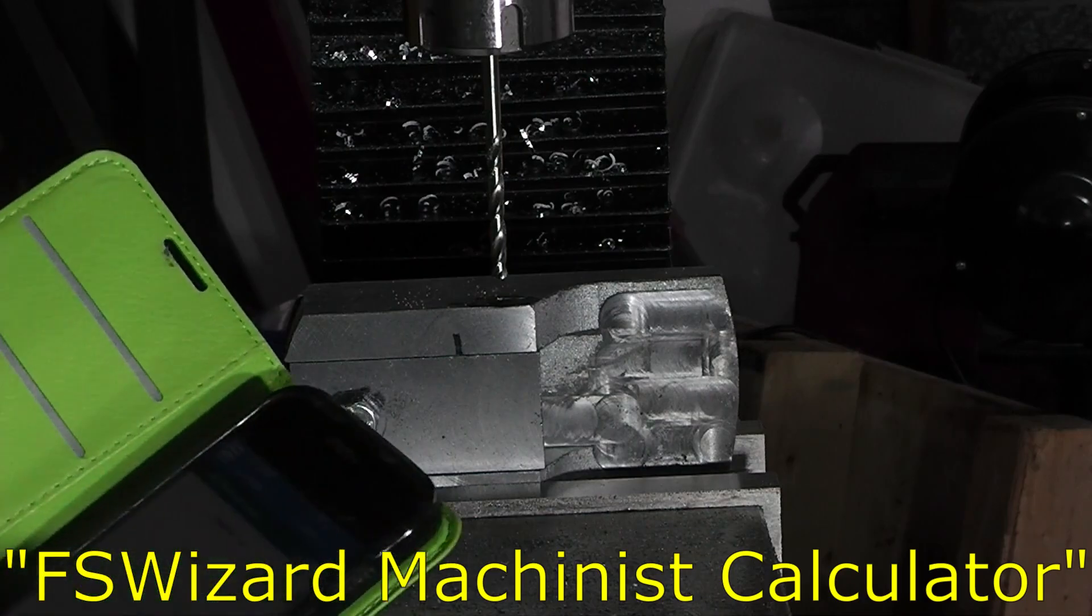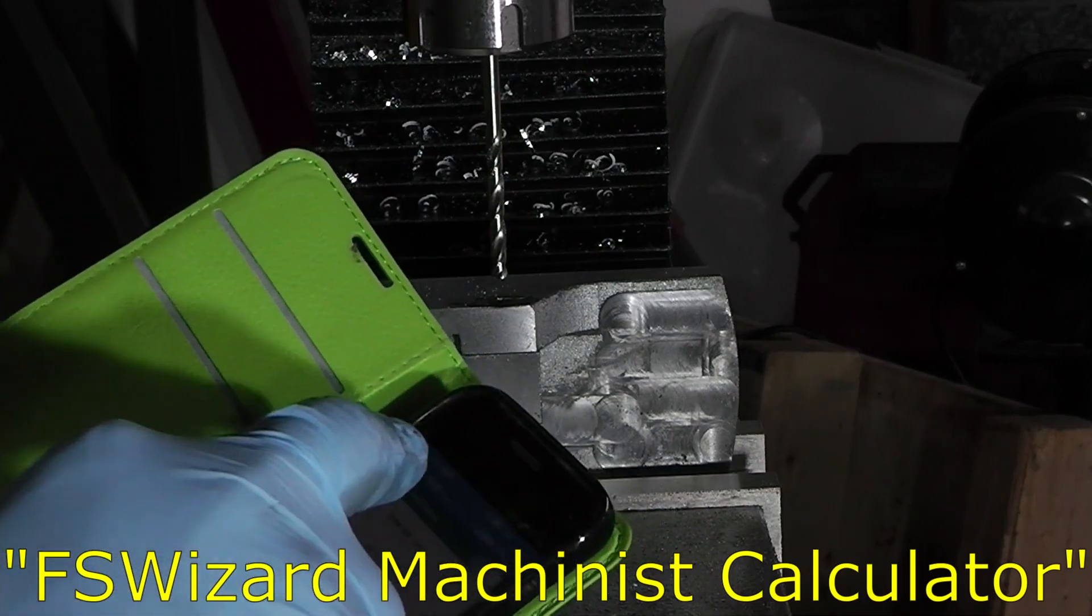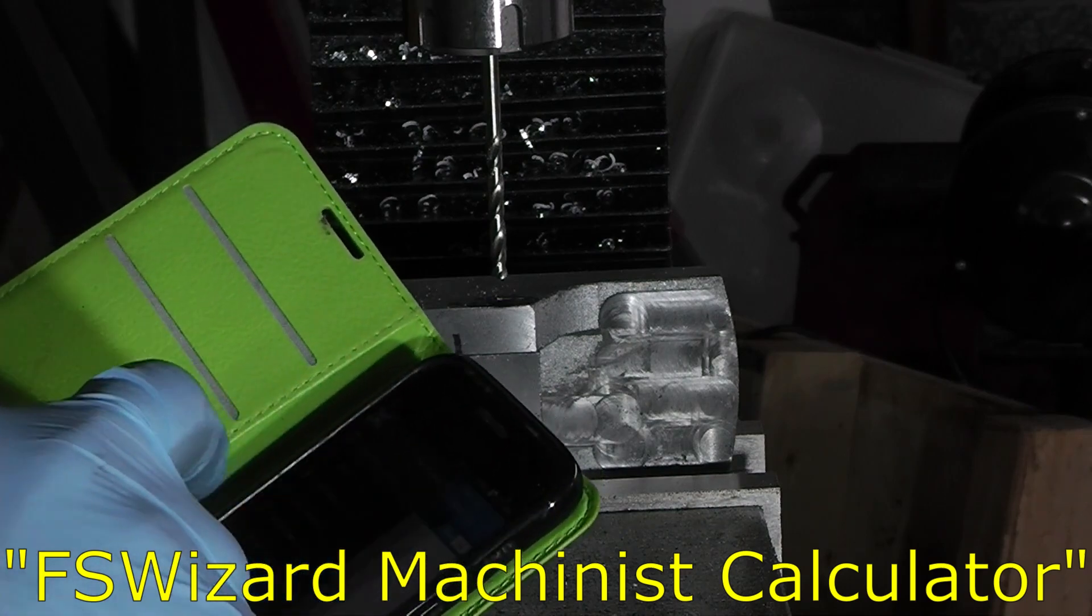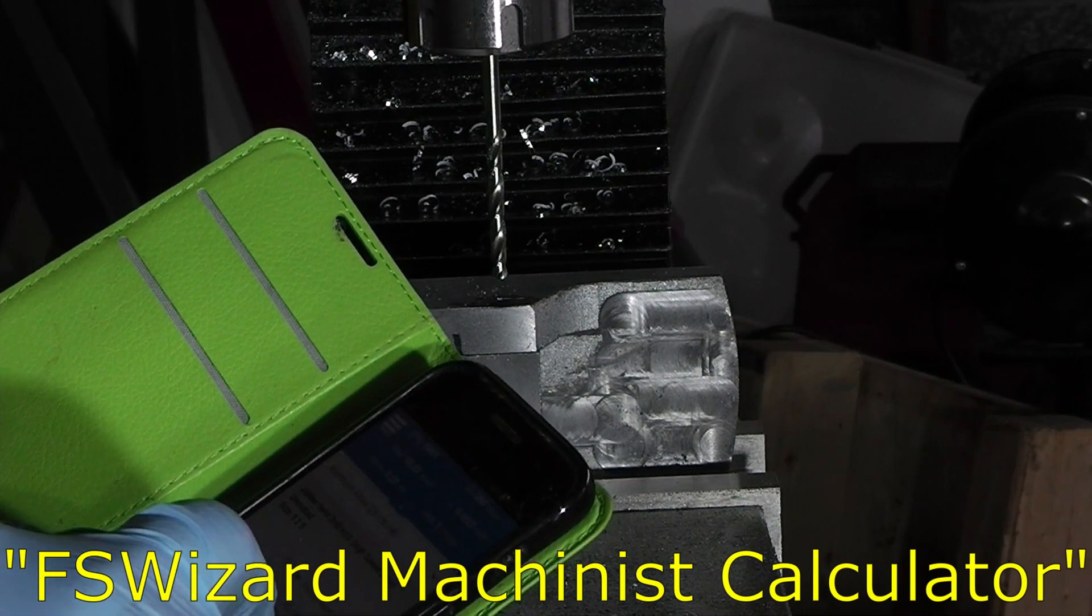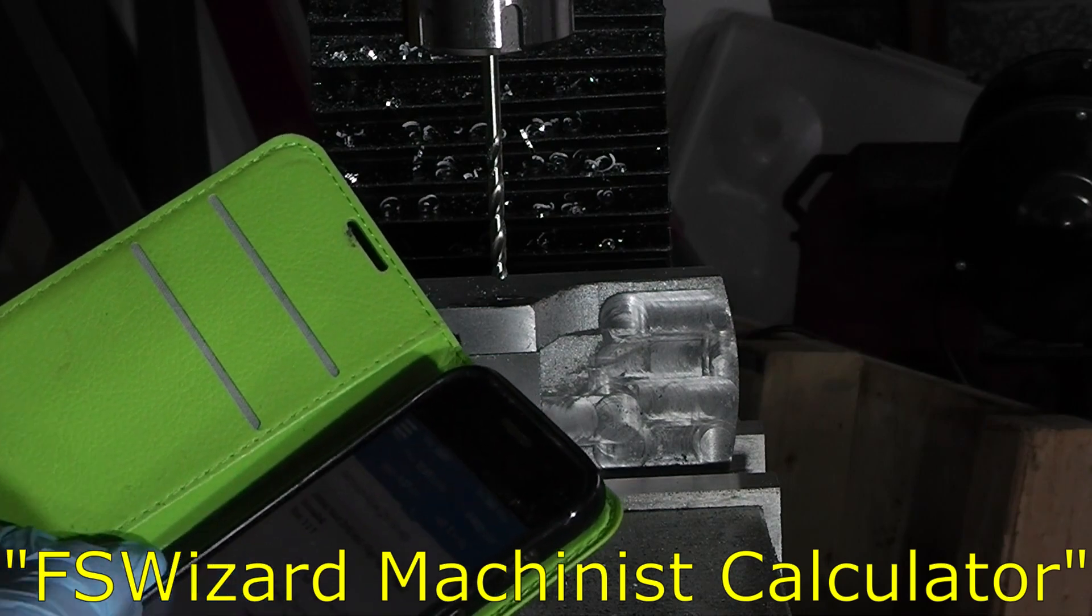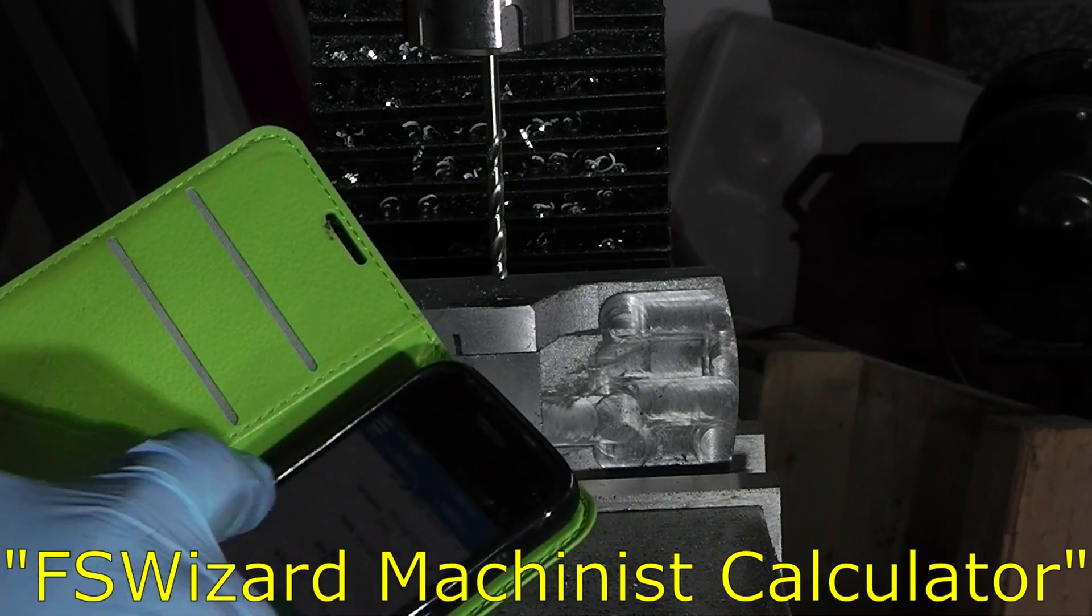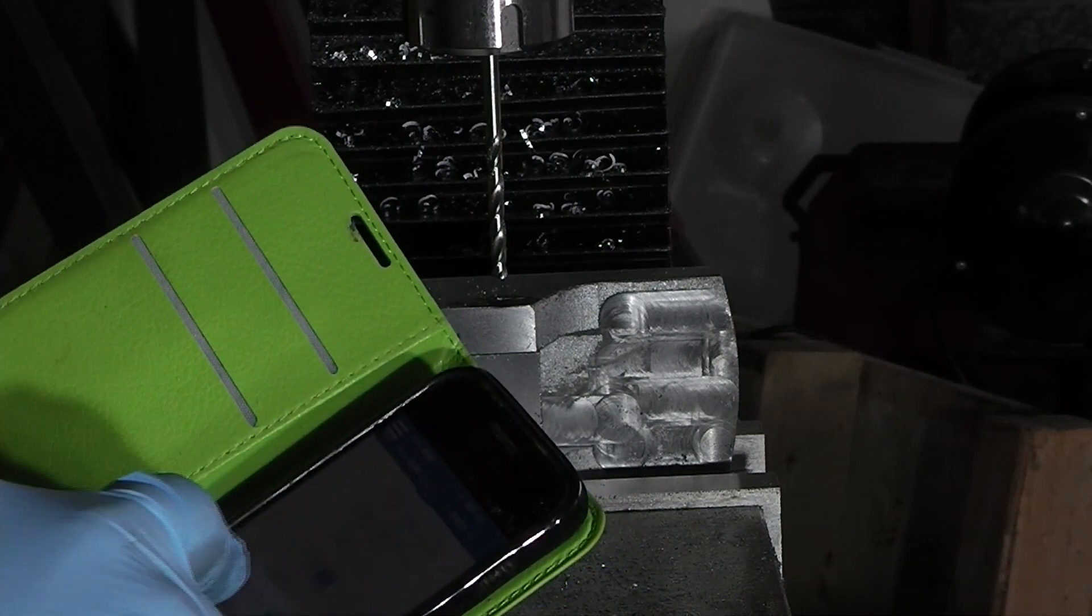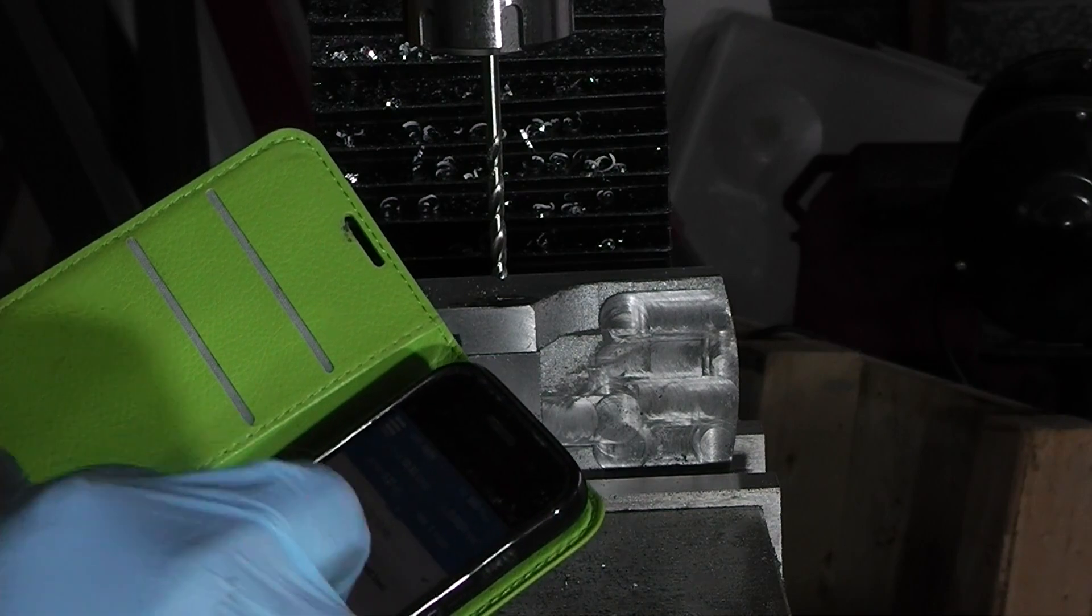I'm doing this drill job in the mill because I want to be precise about it. I found a neat little app for my phone that will tell me what speeds and feeds to use for things. So let's see. Drop a twist drill, 5mm, high-speed steel, cutting an alloy. Just under 7000 RPM according to this.